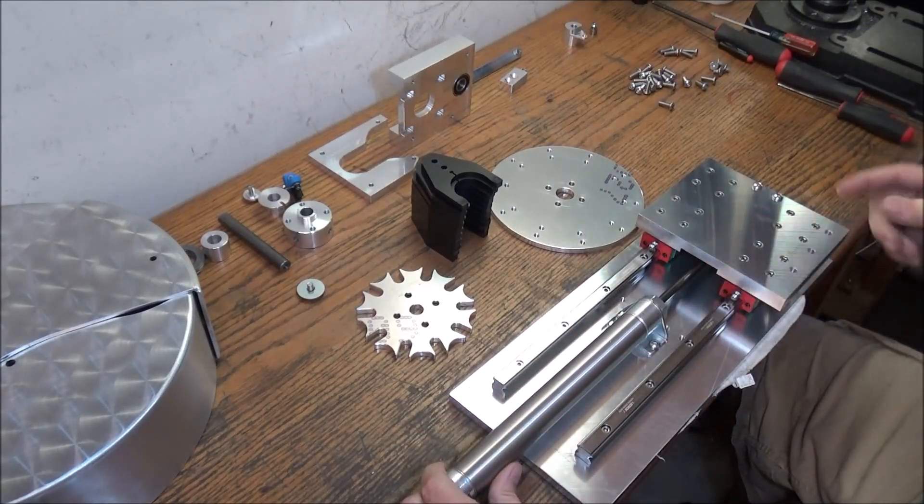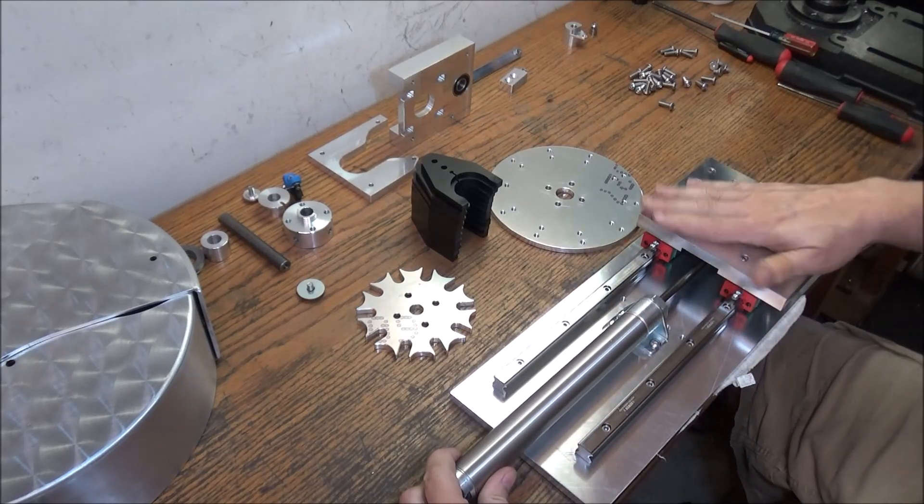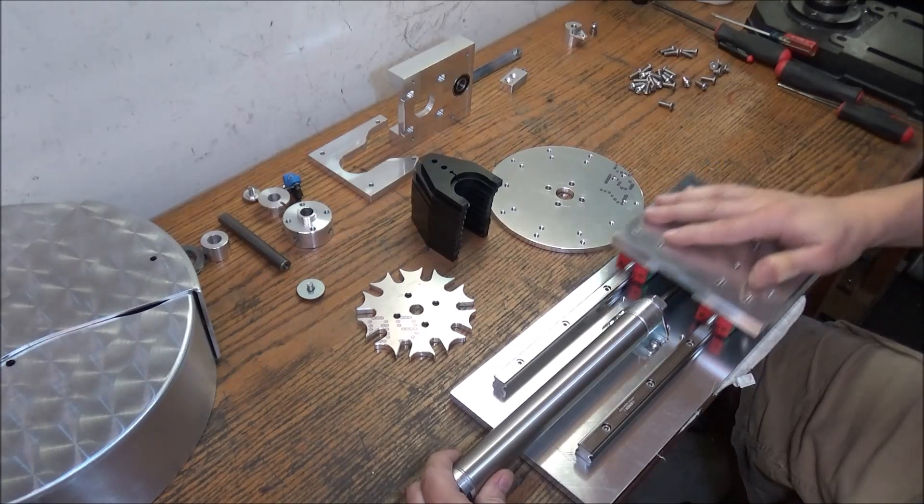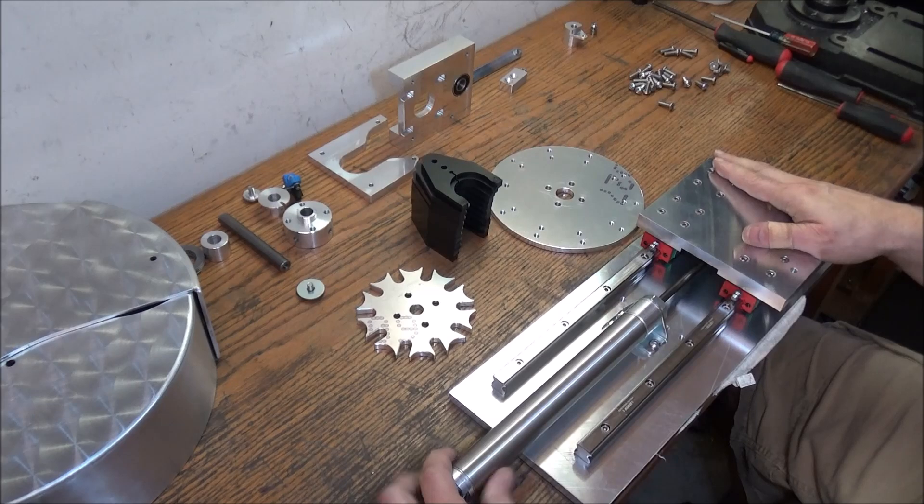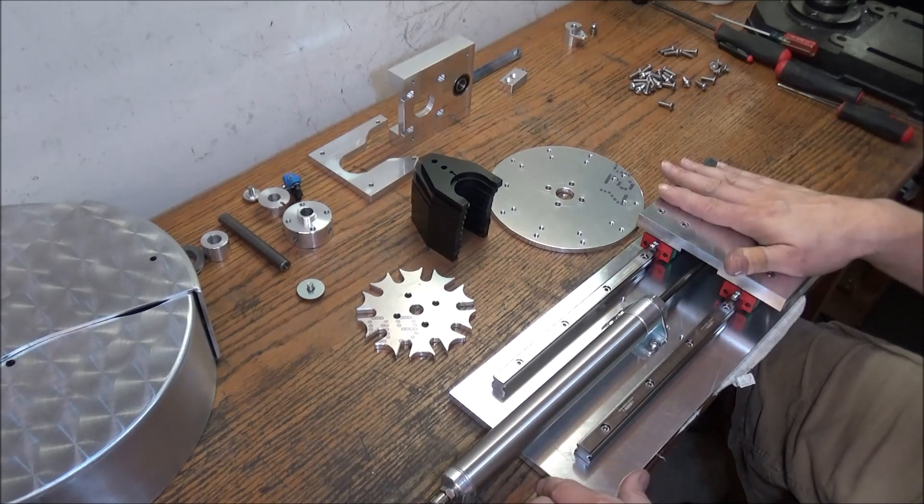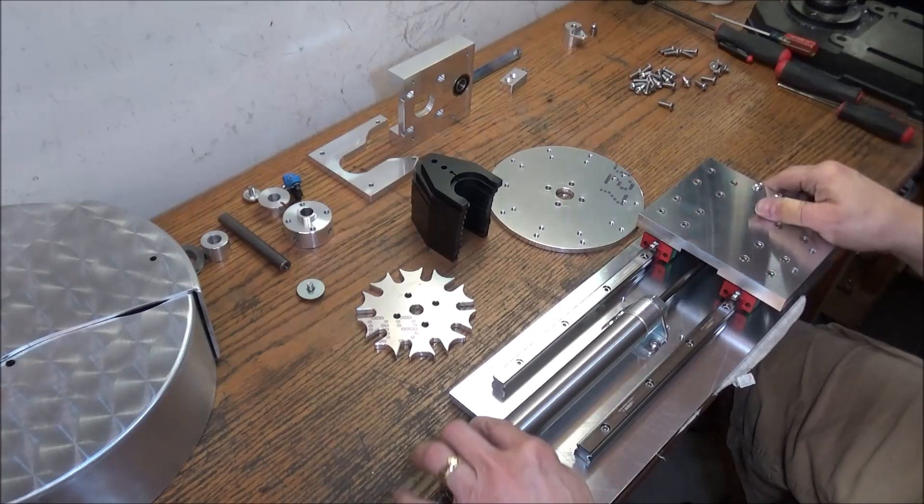We can see that's really smooth and very nice and rigid. That's the assembly of the rail plate, rails, and carrier plate. Now we'll work on the disc here.